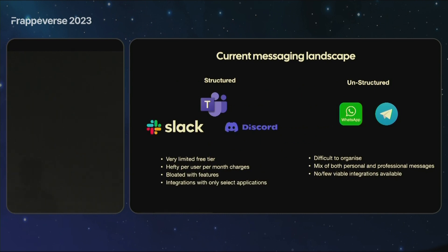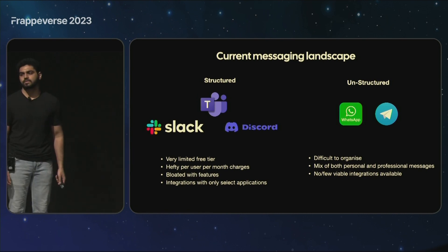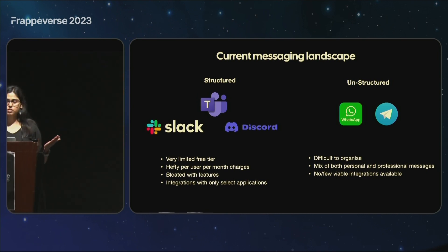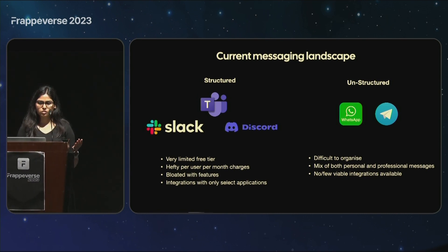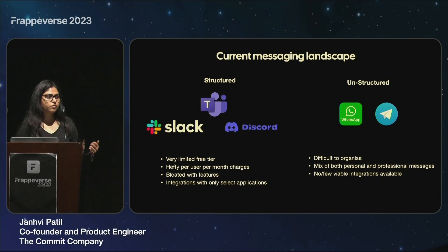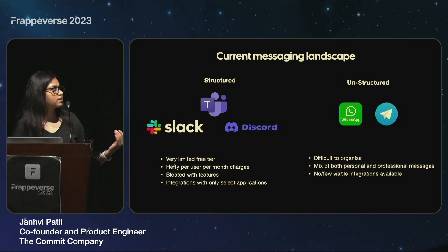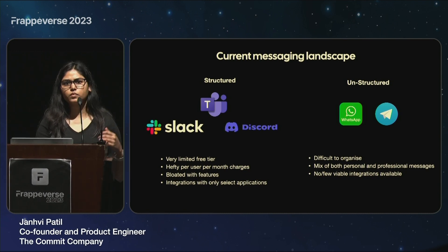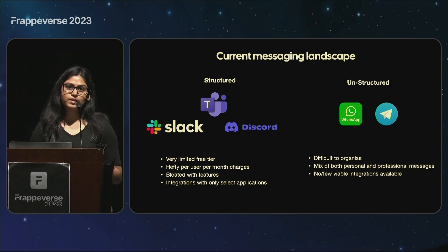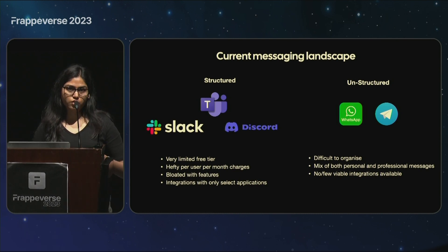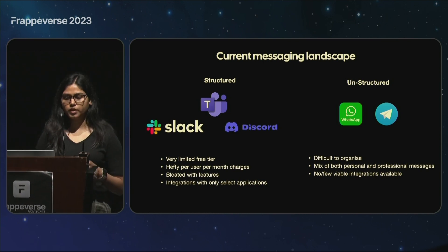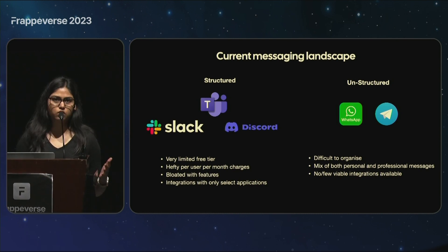Let's talk about the current messaging landscape. It can broadly be categorized into two parts: structured and unstructured. In structured, we have applications like Slack, Teams, and Discord. While these applications are great, they do come with certain limitations.